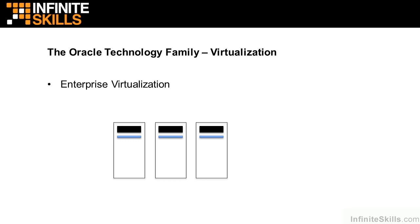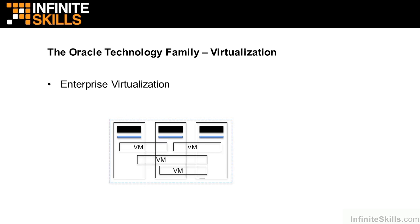What if it were possible to change those three servers to look like 50 servers or 100 servers? That's what virtualization enables us to do. We use virtualization software to make them run together and then create multiple virtual machines, or VMs, that share resources across the three physical machines. Using this architecture, we can create as many virtual machines as we need, limited only by the resources available to those three physical machines.